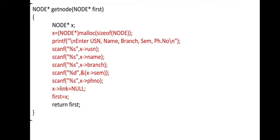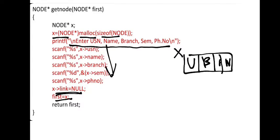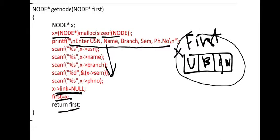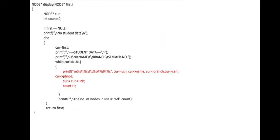First we have to get a node. In getNode(), x is equal to node star malloc size of node — a node will be allocated in memory and named x. Then printf asks to enter USN, name, branch, phone number, and all values are stored. Then x link is set to null, not pointing to any location, and first is equal to x — the first location — and we return first. So in getNode(), we create a node and return it with all values in it.